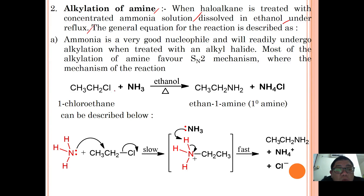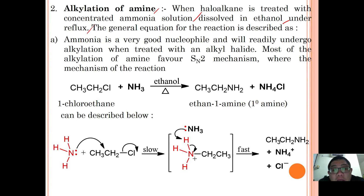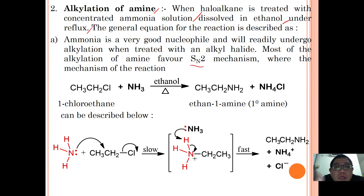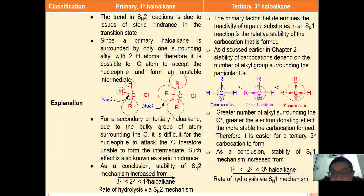The equation can be expressed as: CH3CH2Cl plus ammonia, with ethanol under reflux, forms CH3CH2NH2 which is the primary amine, and HCl as a side product. Ammonia acts as a very good nucleophile and readily undergoes alkylation when treated with an alkyl halide.